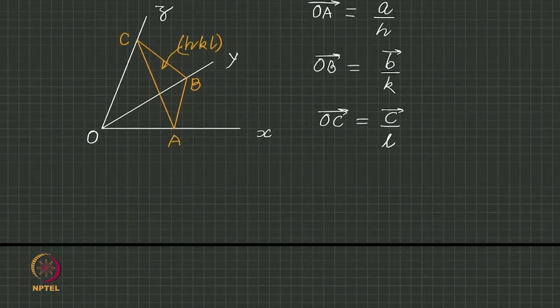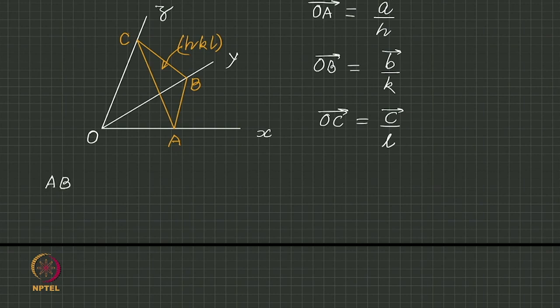Let us find out vectors lying in the plane. Two vectors lying in the plane h k l are a b for example, a b and a c.